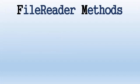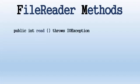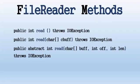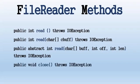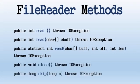FileReader methods: the FileReader class has three read methods. The read method reads characters into an array and will block until some input is available. The close method is used to close the reader. The skip method skips characters and will block until some characters are available.